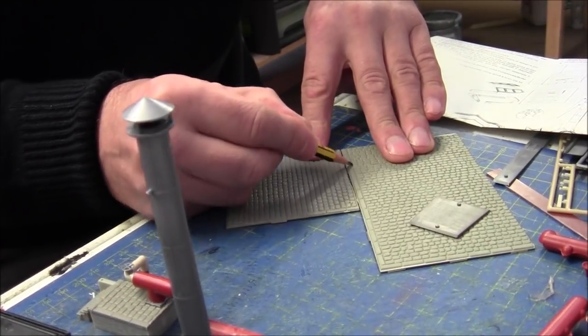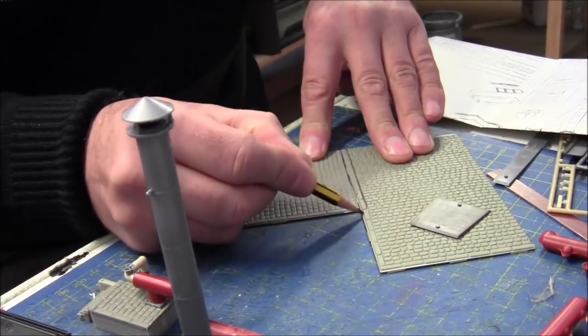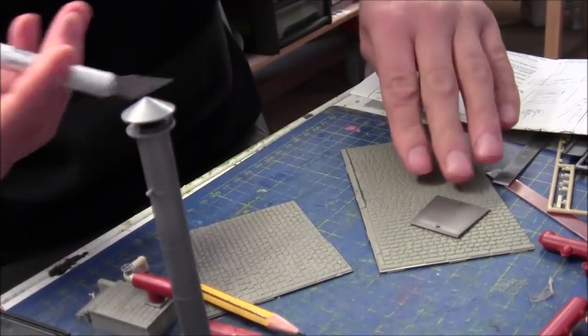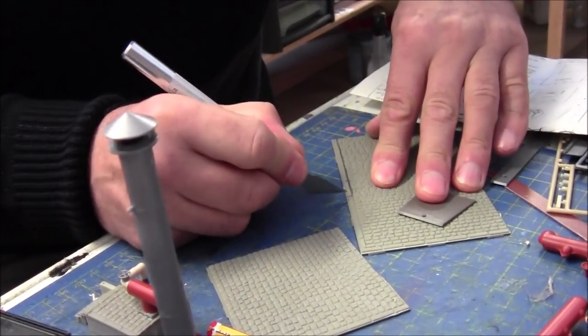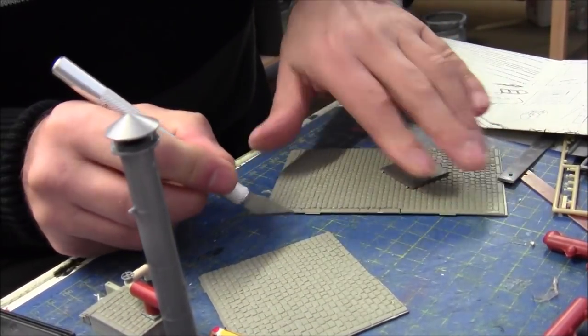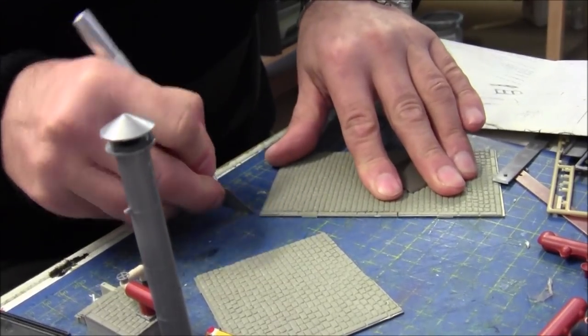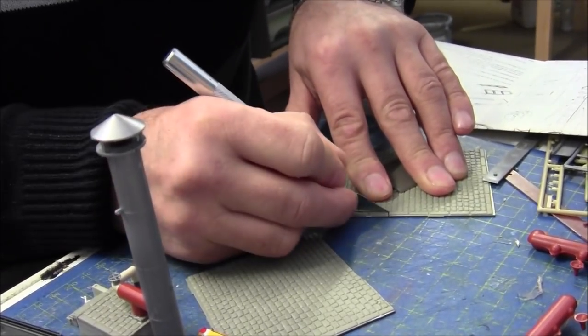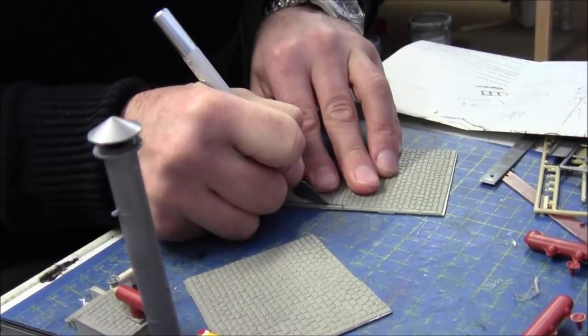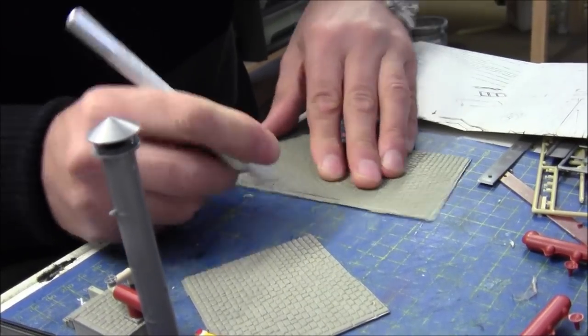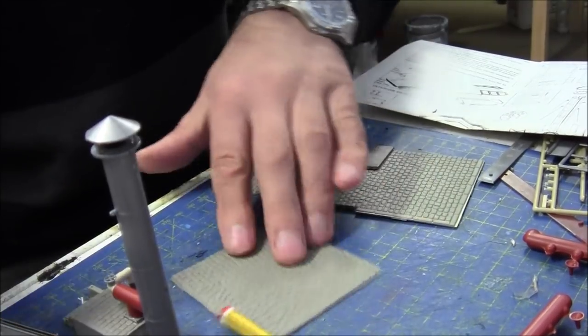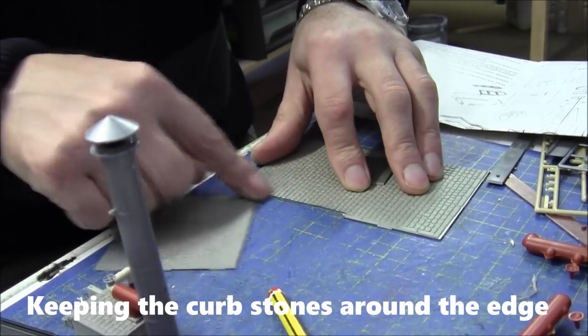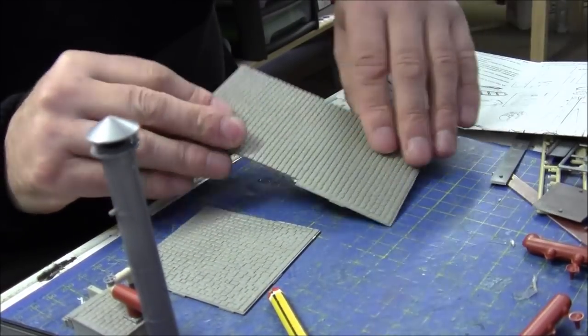That was easy - the knife just follows the groove that's already there and cuts it away. That's sitting there nicely so you've got the cobbles going around the edge. I'll clean up this edge, glue them together, and that'll give us the foundation for the building.